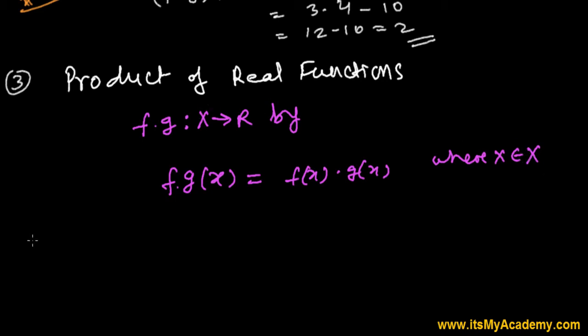So let's take an example that will be better. Let's say f of x equals 2x and g of x, you can take anything, let's say 6x squared. So now I want to find out fg, the product of these two functions.